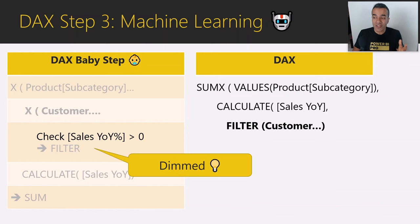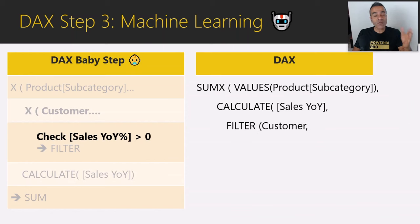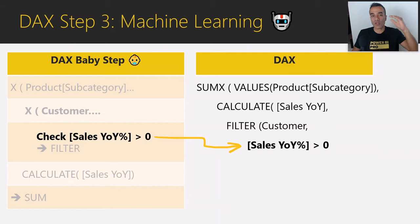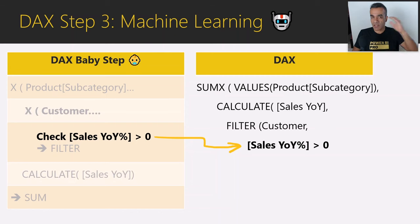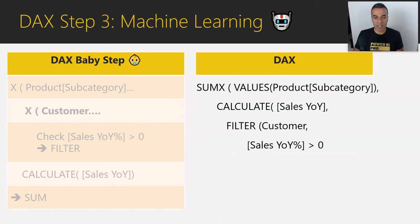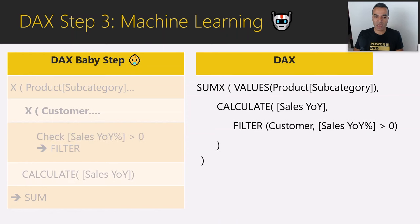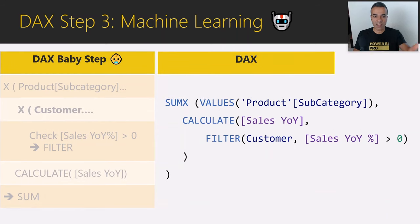That leaves just the expression we pass to FILTER — it's going row by row and evaluating that expression, iterating, and in the end filtering to give us our growth customers. Now let's clean this up — add some closing brackets, pretty it up. In Power BI, the DAX editor will light it up in beautiful colors and make it more readable. And that is our final measure.